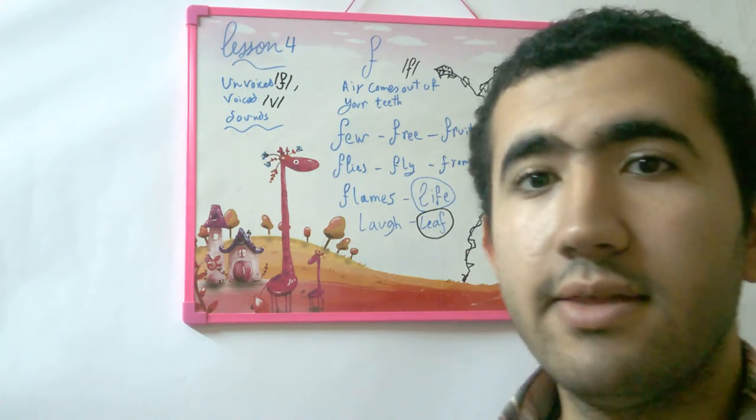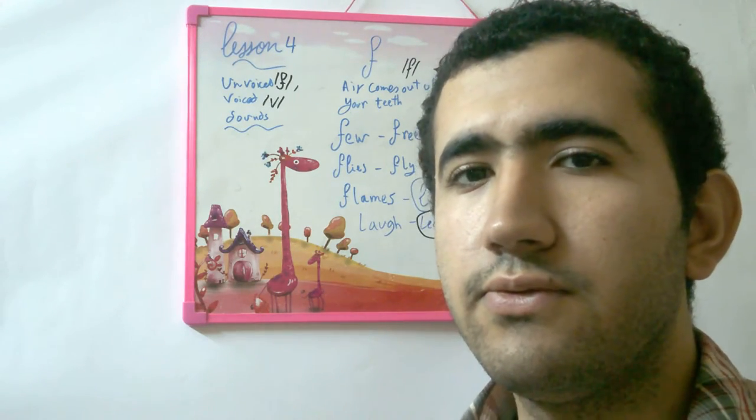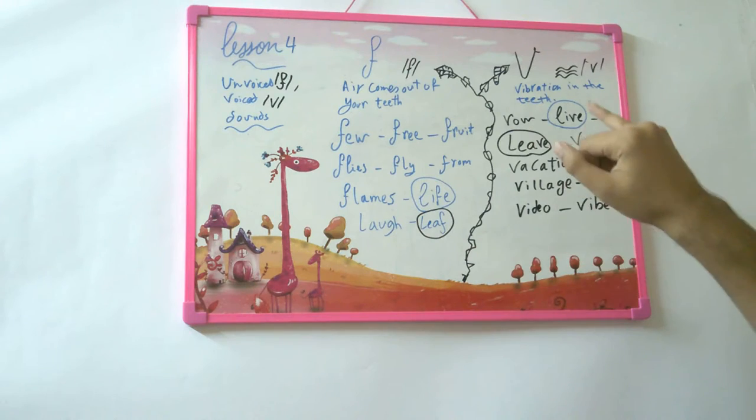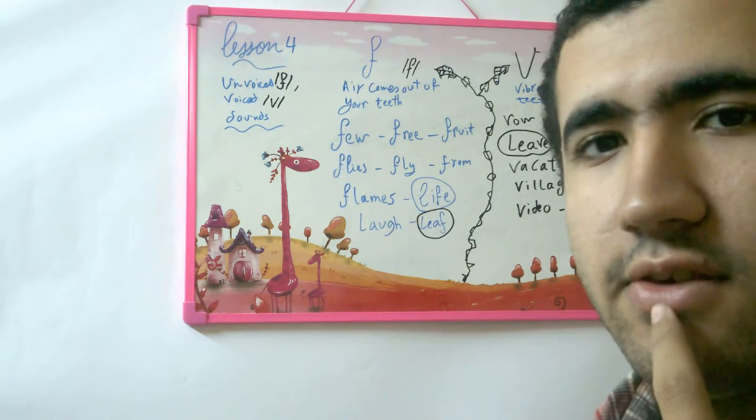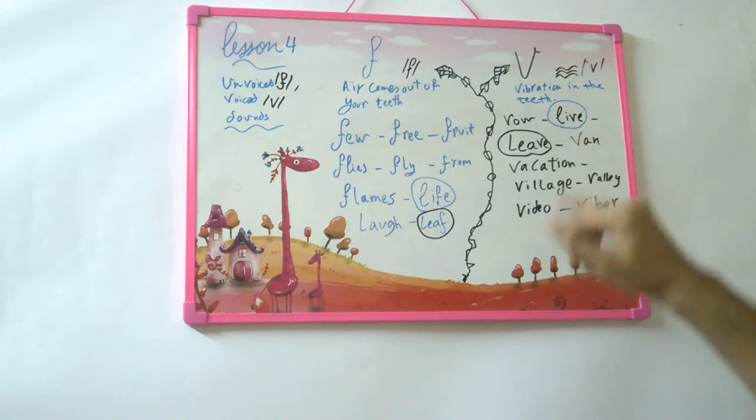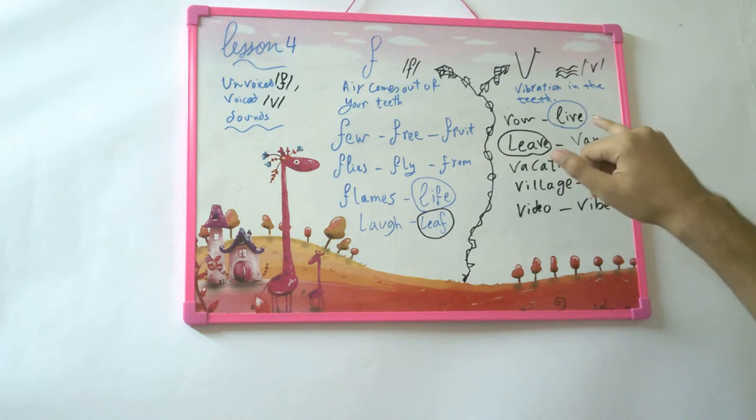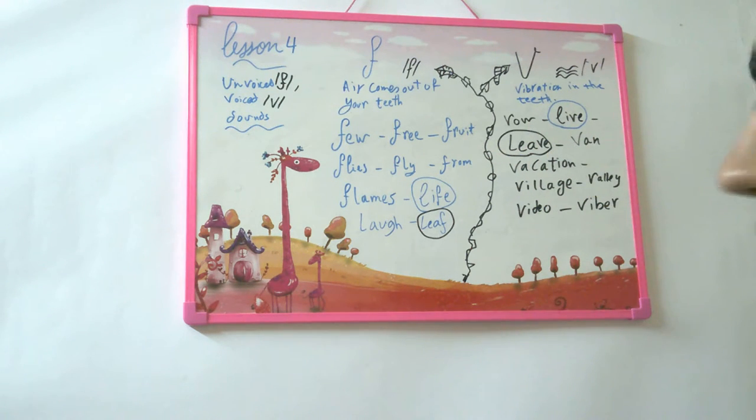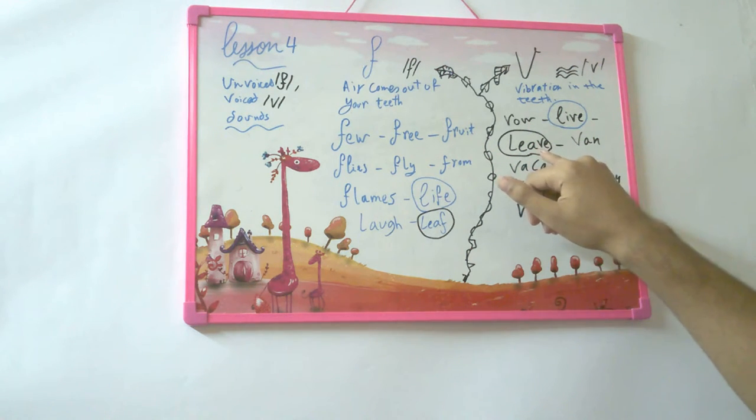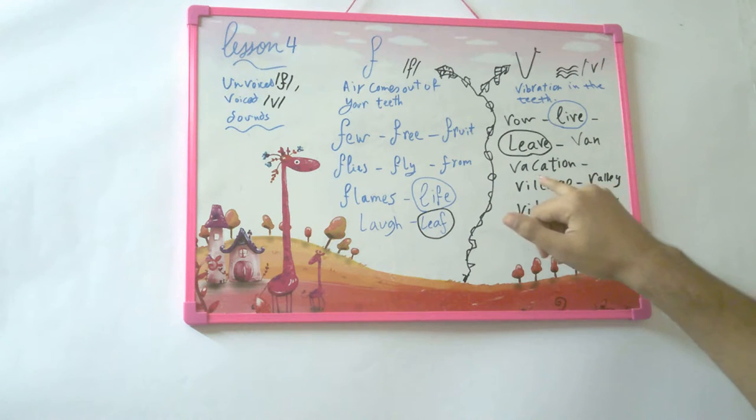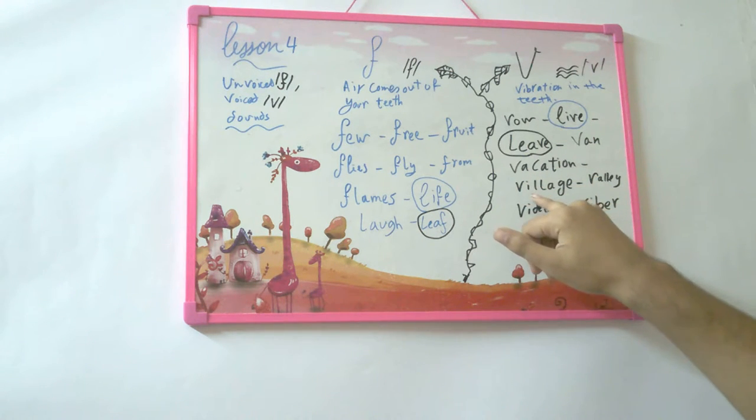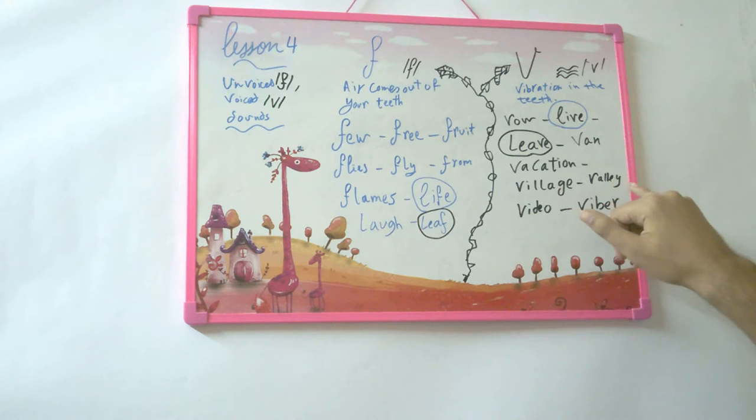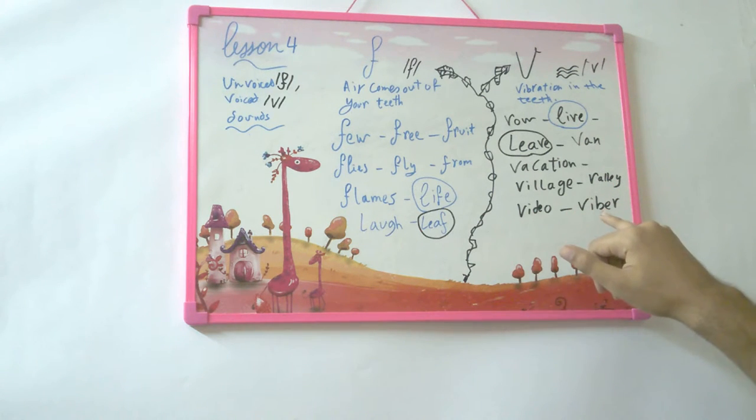Let's look at the V sound. V. Vibration in the teeth. V. So - vow, live, leave, van, vacation, village, valley, video, viper.